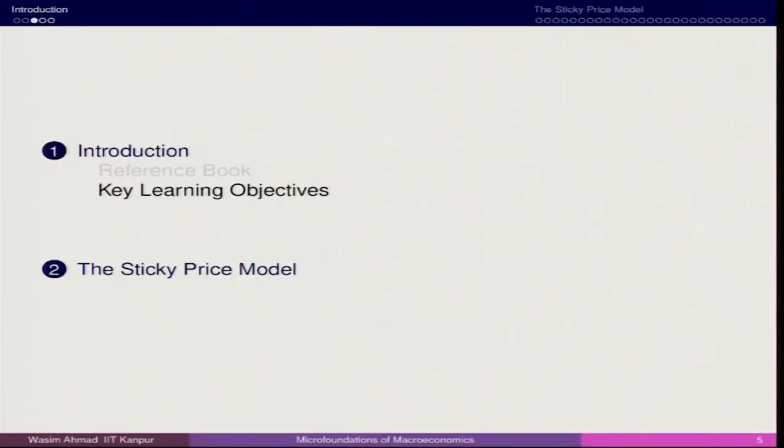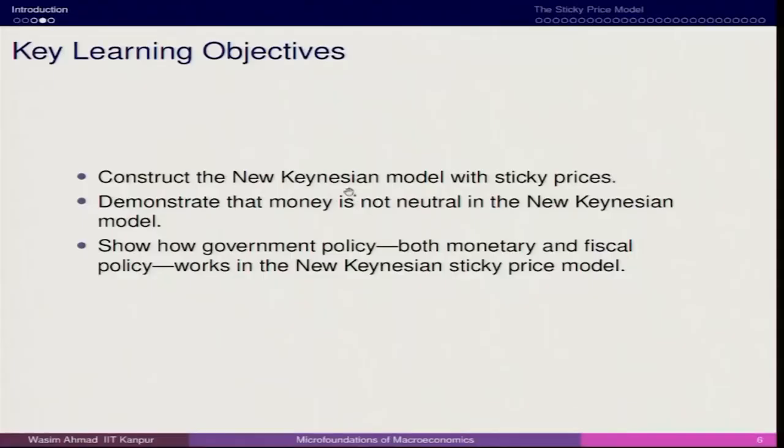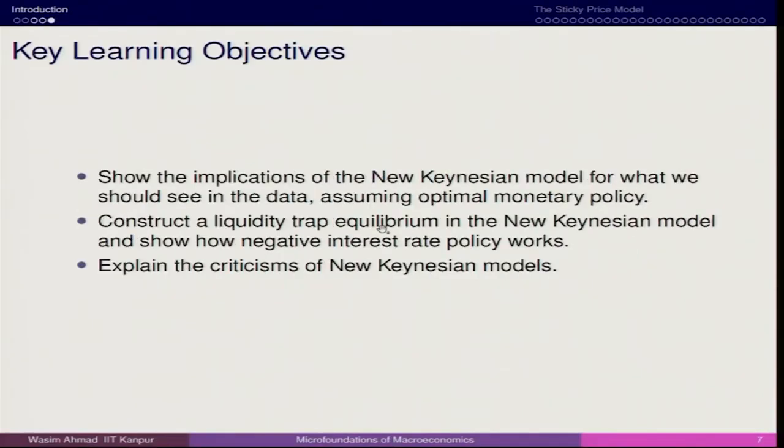The reference books remain the same — Stephen D. Williamson, covering Chapter 15 — and we will also refer to the Mankiw macroeconomics book, where we discuss the dynamic system and the short-run adjustment in the economy. The New Keynesian school of economic thought is primarily about short-run adjustment in equilibrium, and we will be talking about those things.